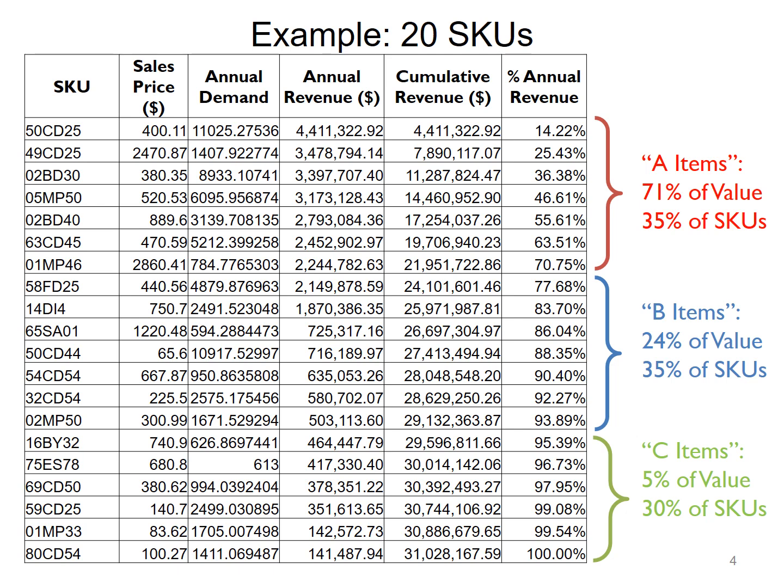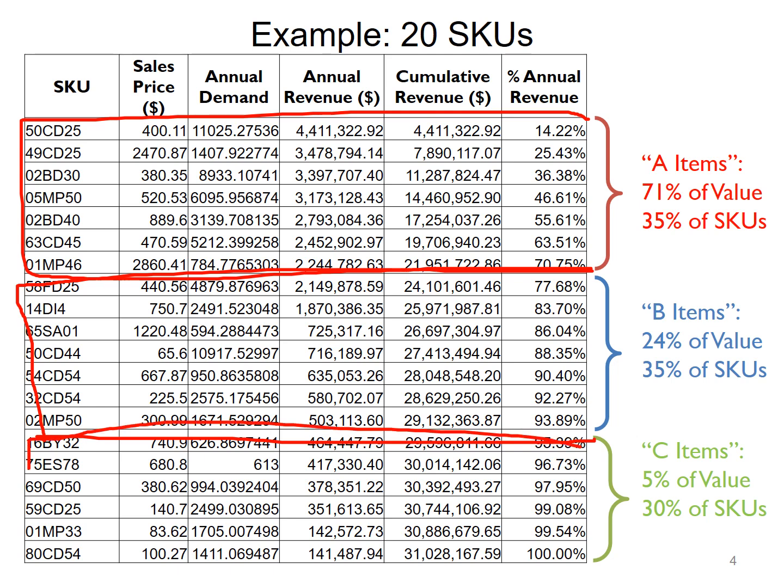But there's six SKUs in here so that's thirty percent of all the SKUs. The first seven are going to be my A items. The next seven are my B items and the last six are going to be my C items.